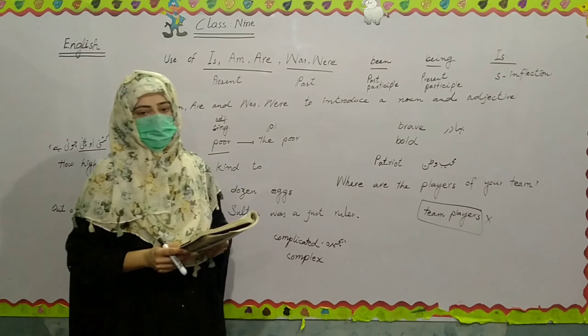Was the rich man kind to the poor? 'Kind' always takes the preposition 'to' — kind to the poor. Singular is 'poor' and plural is 'the poor.' When we make the plurals of adjectives, we use 'the' — like 'the poor' and 'the rich.'